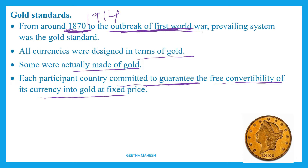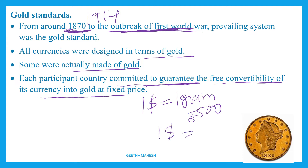What does full convertibility of currency into gold at a fixed price mean? For example, if to make one dollar they used one gram of gold, and the price of one gram of gold is 500 rupees, then the exchange rate is one dollar equals 500 rupees. At that fixed price of gold, countries allowed conversion of currency into gold, and all participating countries committed to guarantee this free convertibility.